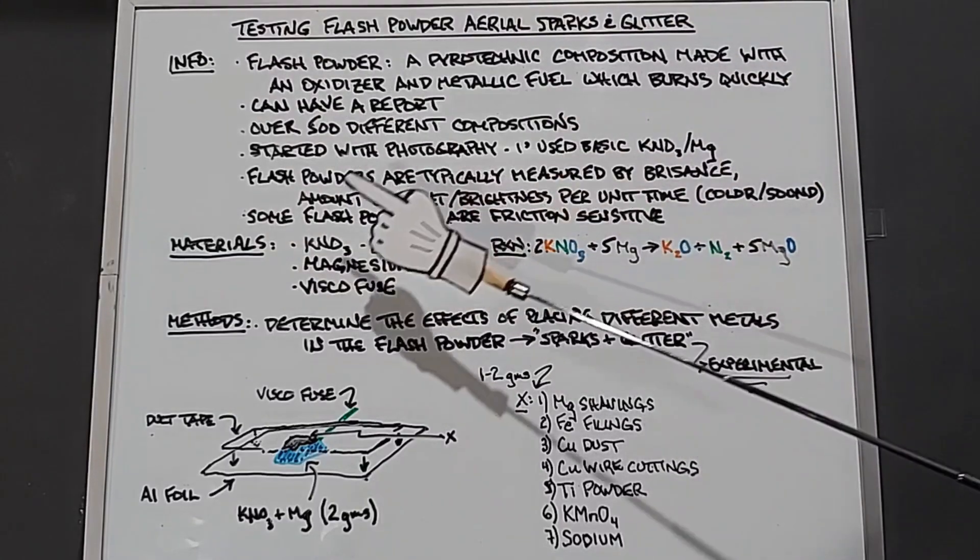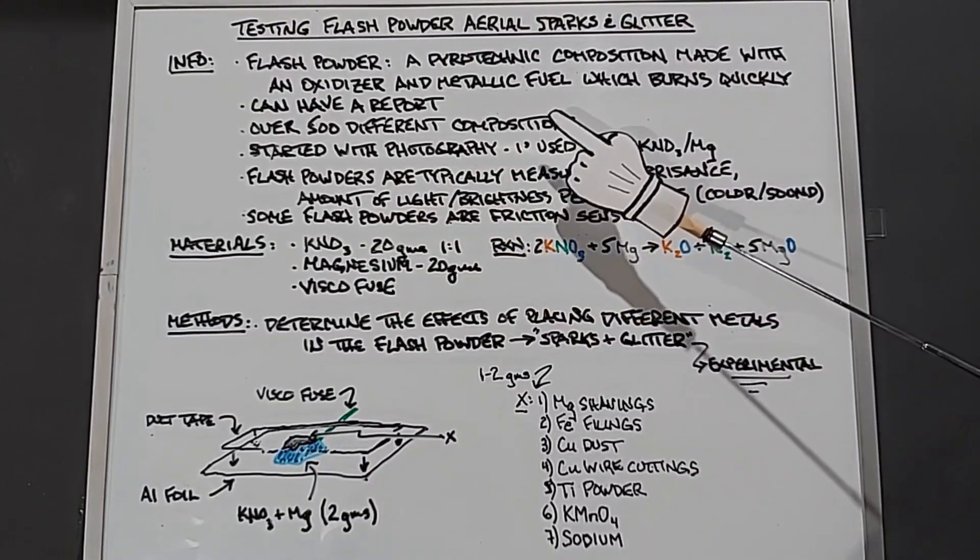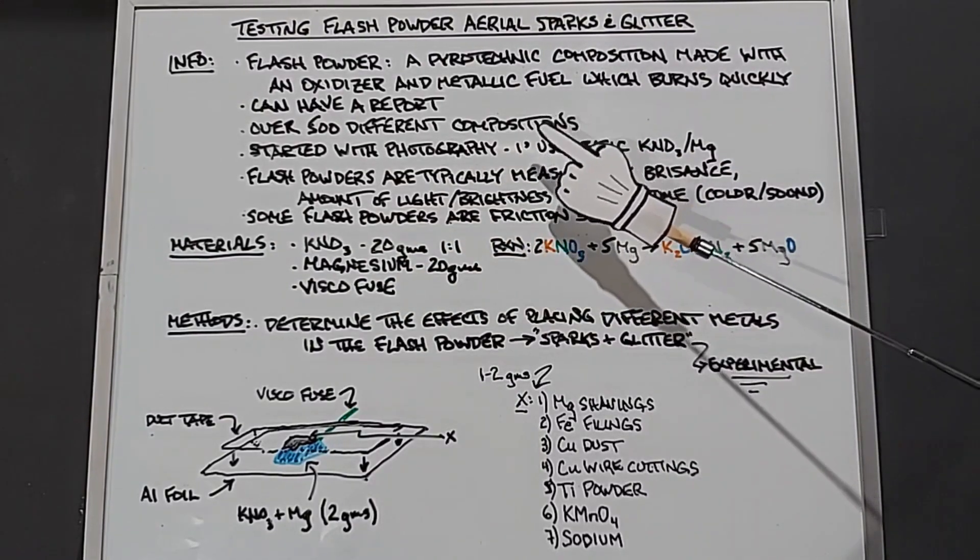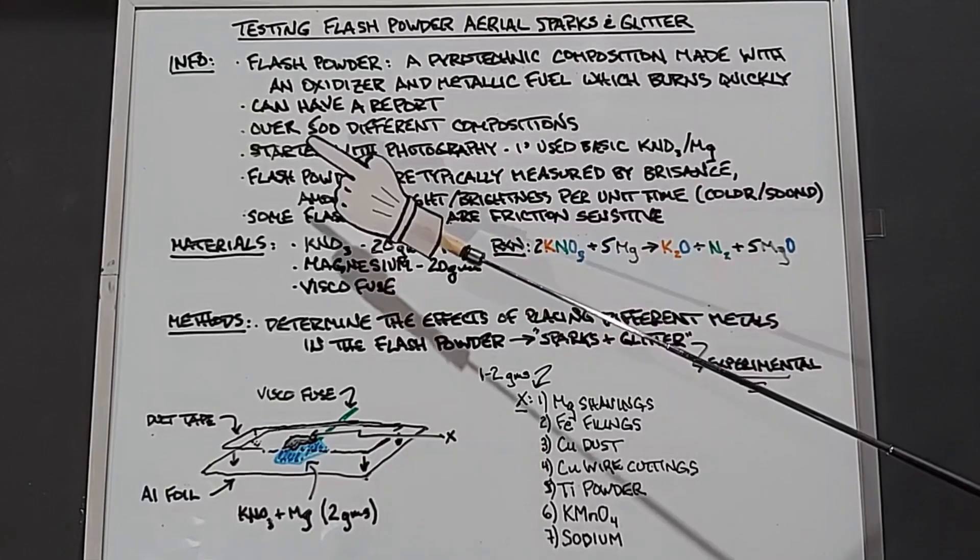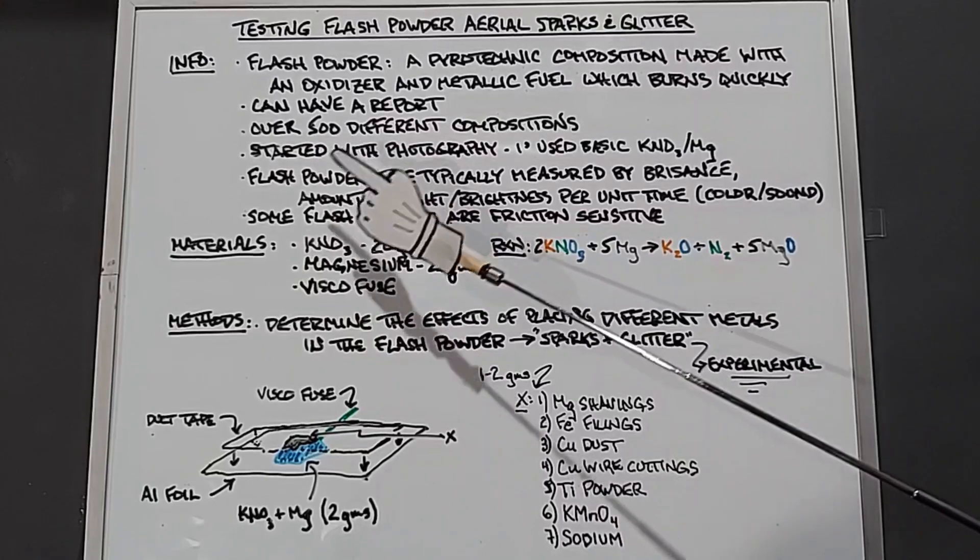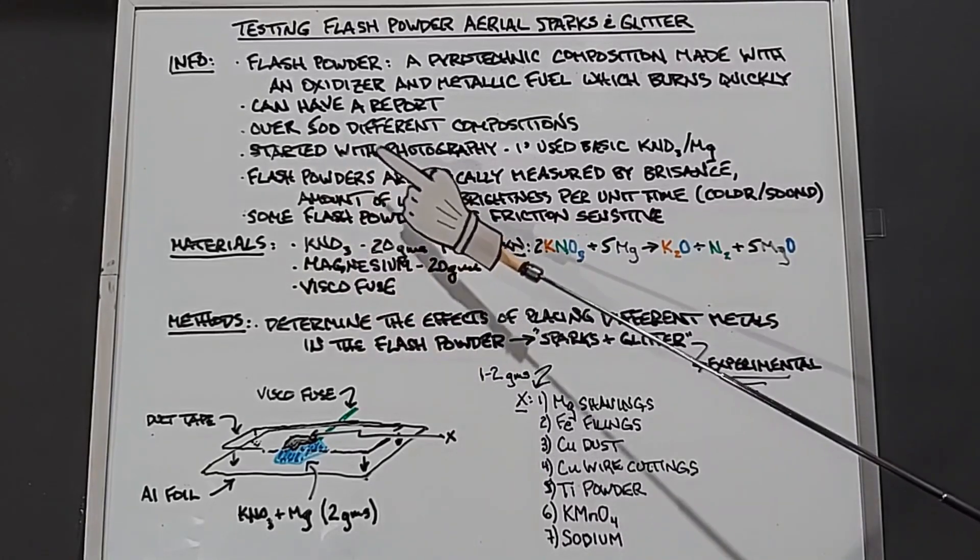It may or may not have a report or sound. Some reports have over 500 different compositions. At this point I read one that said there's over a thousand, but regardless there's a lot of different ways to make flash powders. The use of flash powders initially started with fireworks some time ago, but the refining of them started with photography.